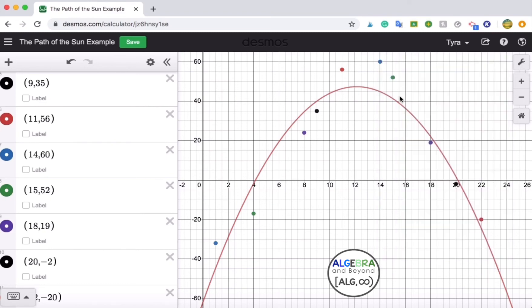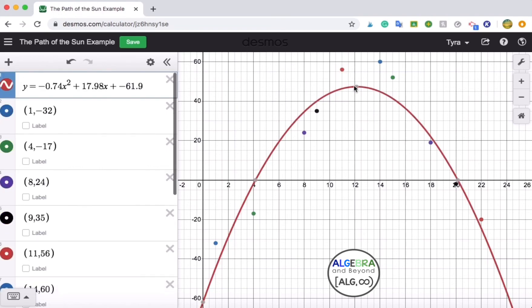The last thing I want to show you, which is really helpful, is you want to click on the parabola. And you can see here that it gives me my vertex, and I can click on the x-intercepts as well and it gives me those points and even the y-intercept.